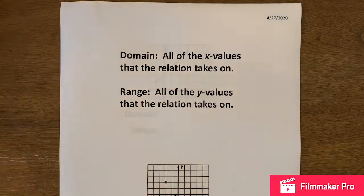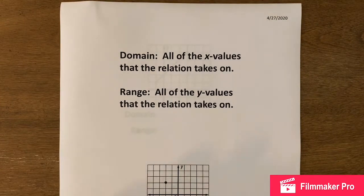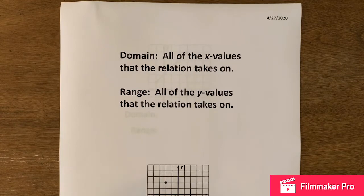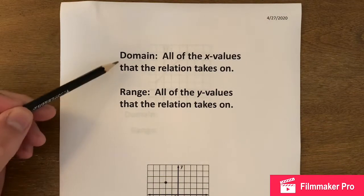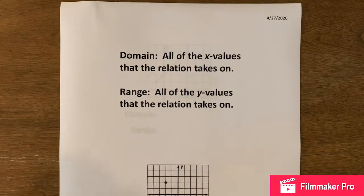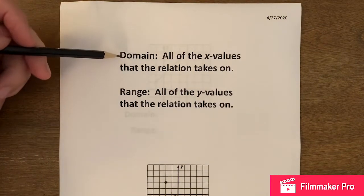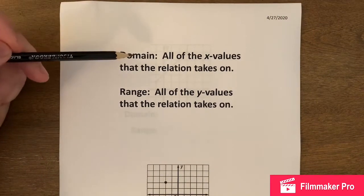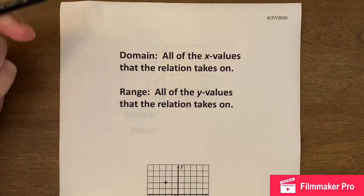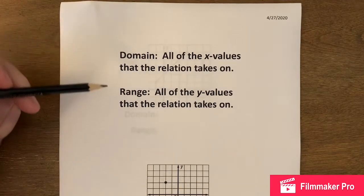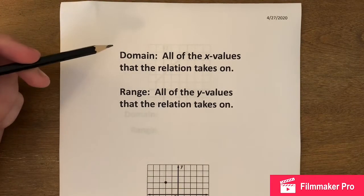So as far as domain and range goes, I've got my first slide up here. The domain are all of the x values that the relation takes on, and the range is all the y values that the relation takes on. The domain are all of the x values for the independent variable, and you probably heard that in other classes like science — your independent variable is the input and the range is the output. That's another way to think about domain and range.